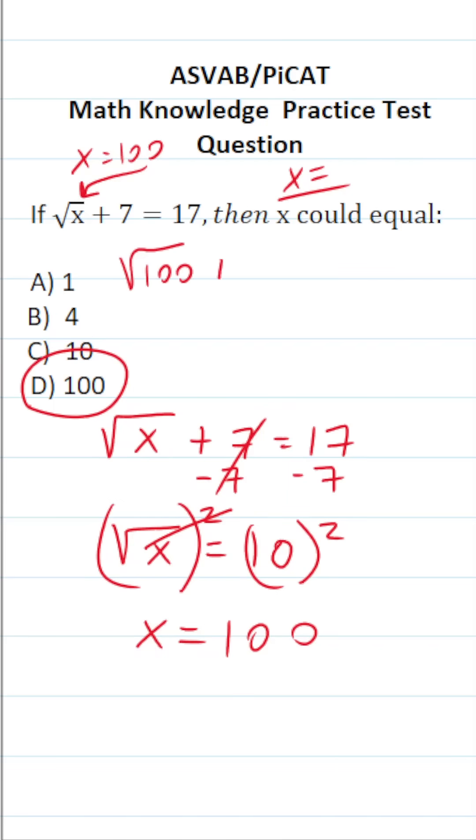This becomes the square root of 100 plus 7 equals 17. The square root of 100 is 10, plus 7 equals 17. 10 plus 7 is 17. 17 does in fact equal 17. That is a true statement, so I'm confident that we answered this one correctly.